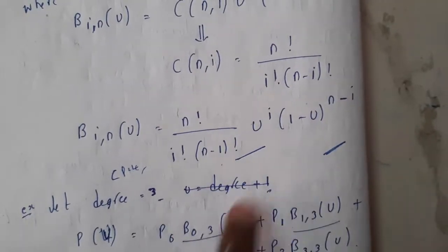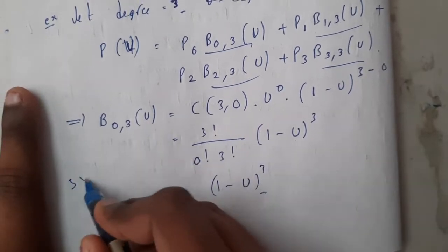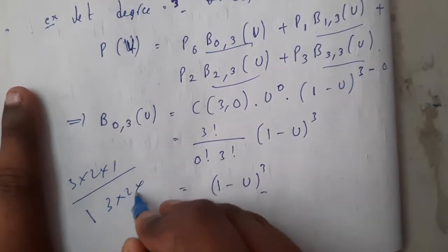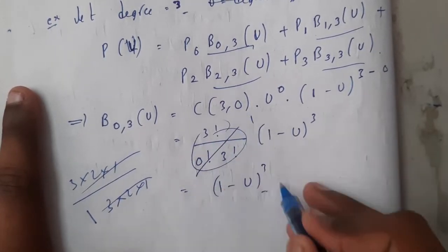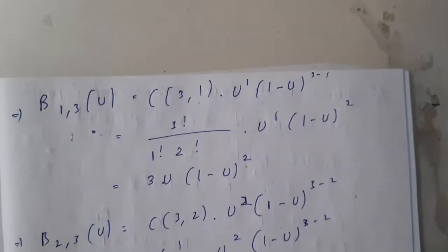Initially let us find the values of these things. We have just gone through the formula. Just to substitute in that, I hope everyone knows how to calculate the factorials. 3 factorial is 3 into 2 into 1 and 0 factorial is always 1. So these both will cancel, so this becomes 1 and you'll be getting (1-u) to the power 3.